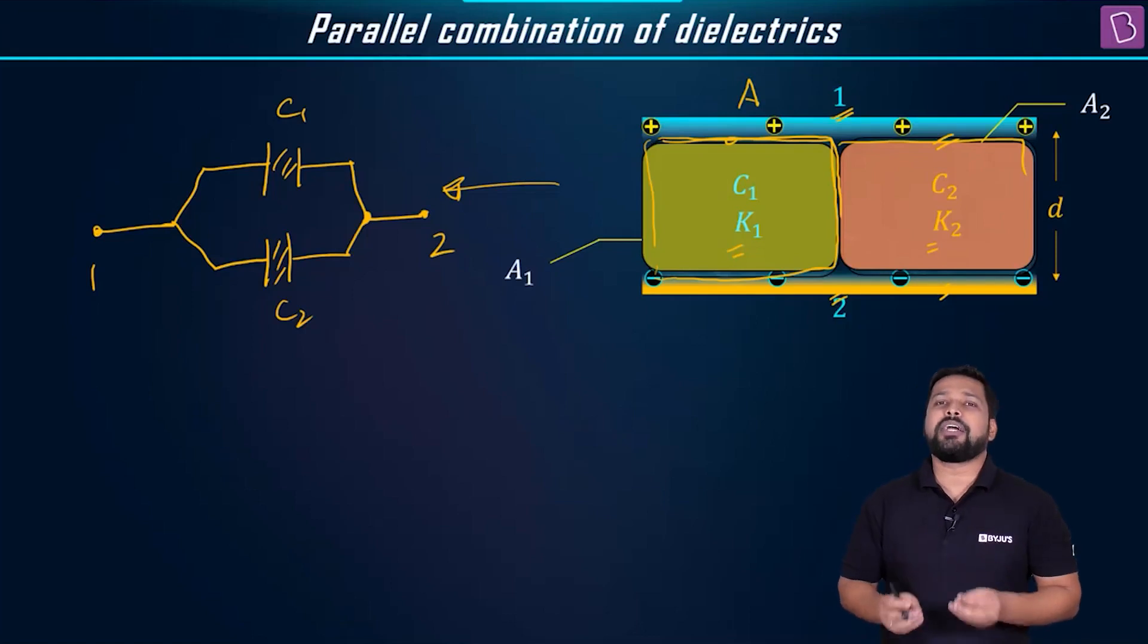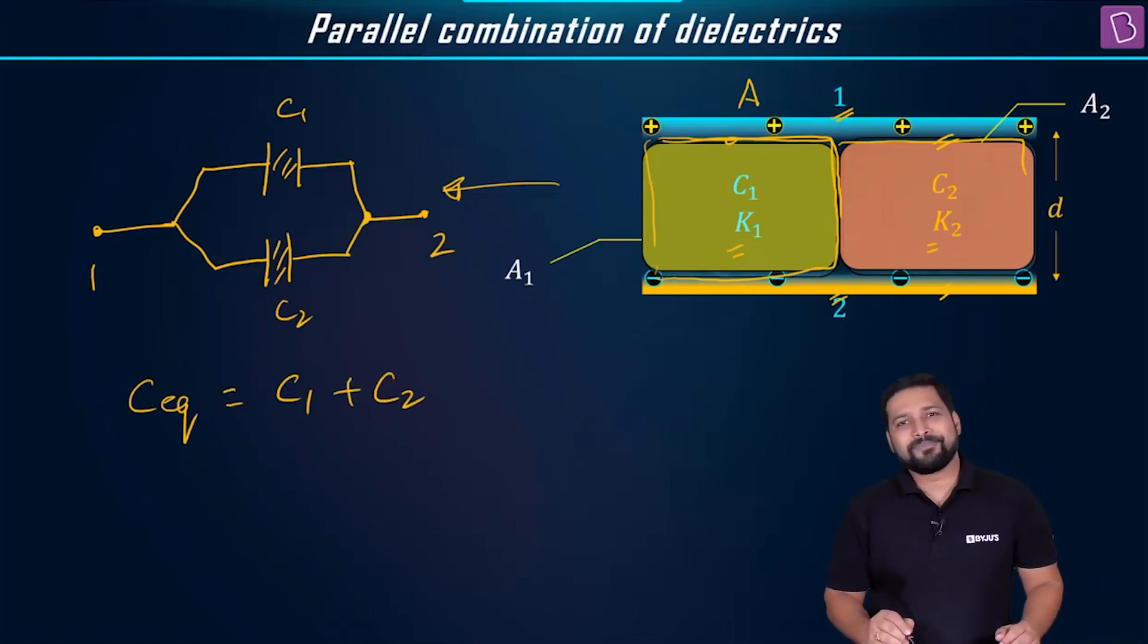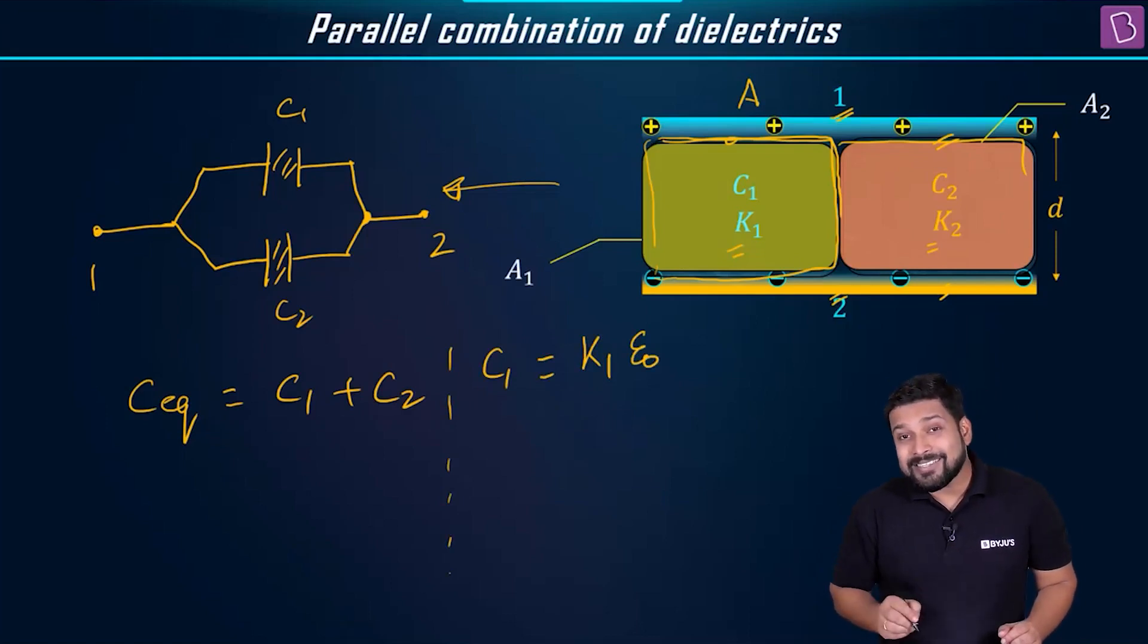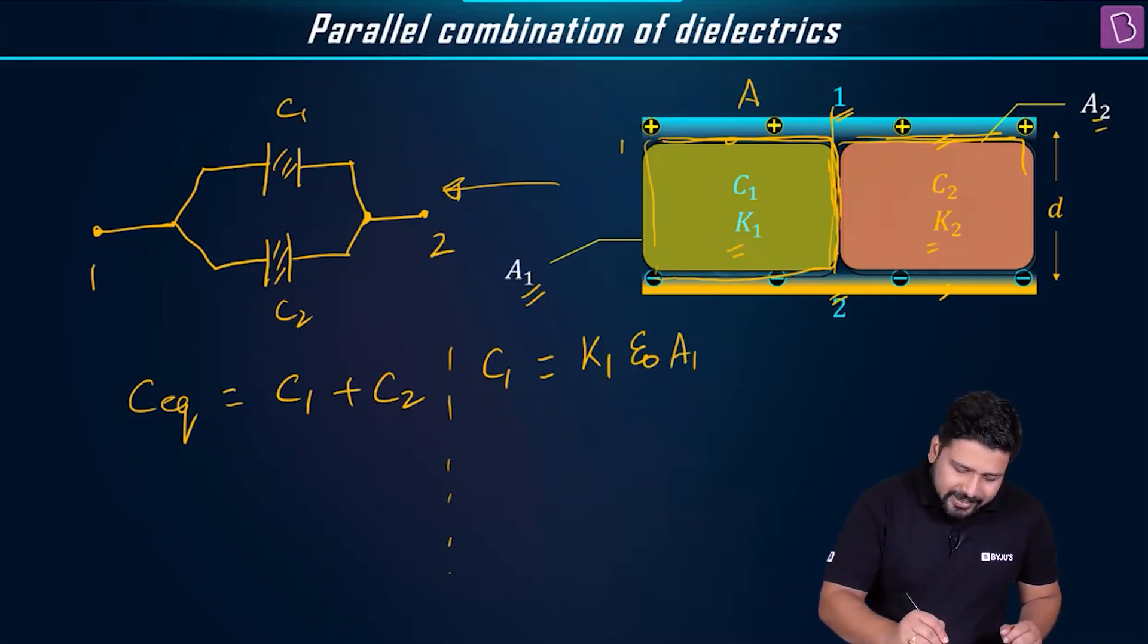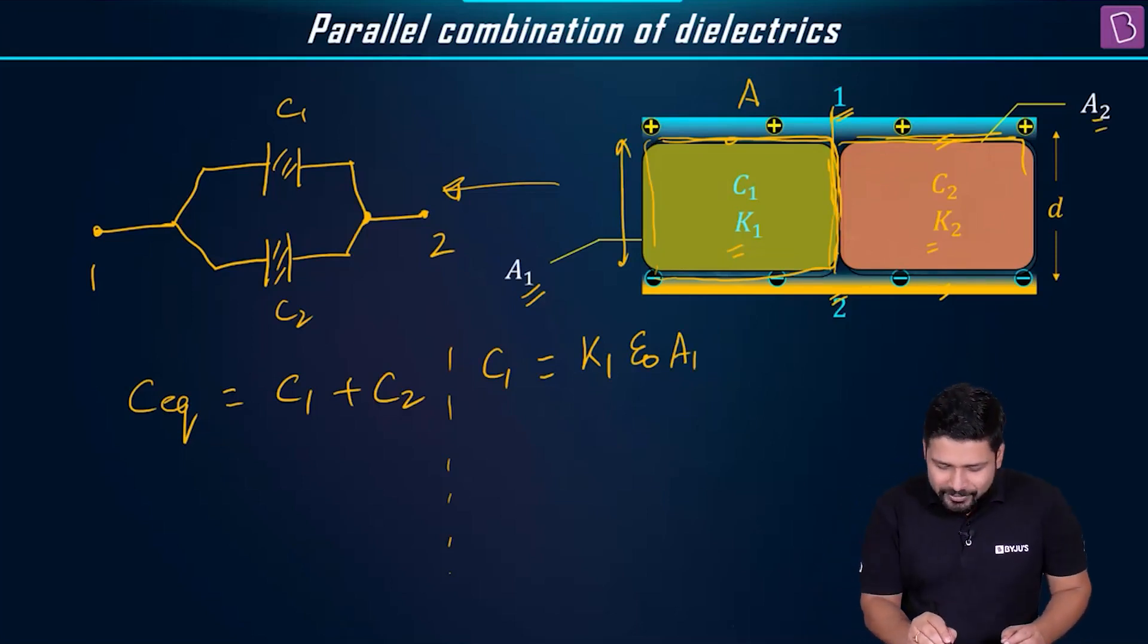What will be C equivalent? Very simply, the formula that we use for parallel combination: C equivalent is going to be equal to C1 plus C2. What will be the value of C1 and C2? C1 is going to be equal to K1 times epsilon 0. Now, is the area same? No, the area is not the same. This is A1, this is up to this part and this is the rest remaining. Now this is A1 and this is A2. So K1 epsilon 0 A1. And is this thickness same? The distance between the plate is what is the thickness of this dielectric slab also. So divided by d. What about C2? C2 is equal to K2 epsilon 0 A2 divided by D.